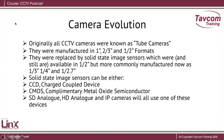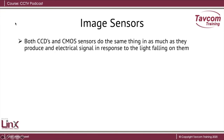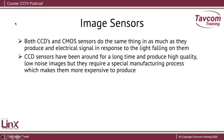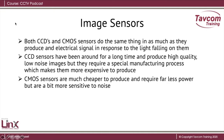Standard definition analog, high definition analog, and IP cameras will all use one of these devices. Both CCDs and CMOS sensors do the same thing in as much as they produce an electrical signal in response to the light falling on them. CCD sensors have been around for a long time and produce high quality low noise images, but they require a special manufacturing process which makes them a little bit more expensive to produce. CMOS sensors are much cheaper to produce and require far less power, but they are a little bit more sensitive to noise.